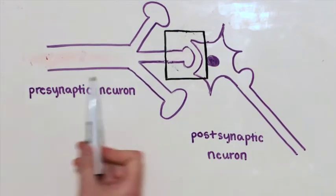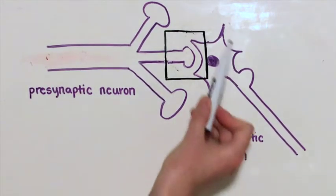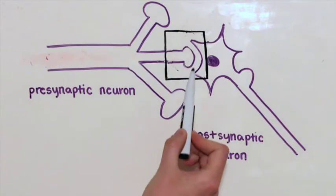Here I've drawn two neurons. The pre-synaptic neuron communicates with the post-synaptic neuron at the axodendritic synapse.